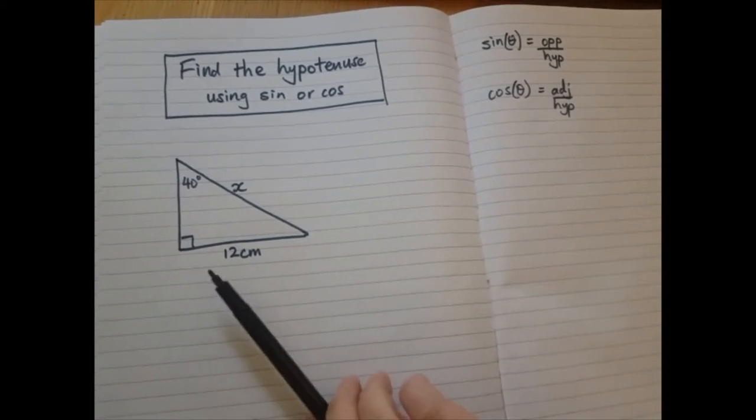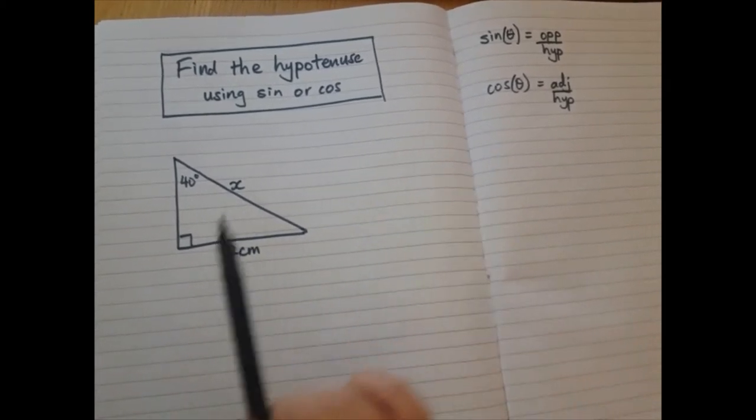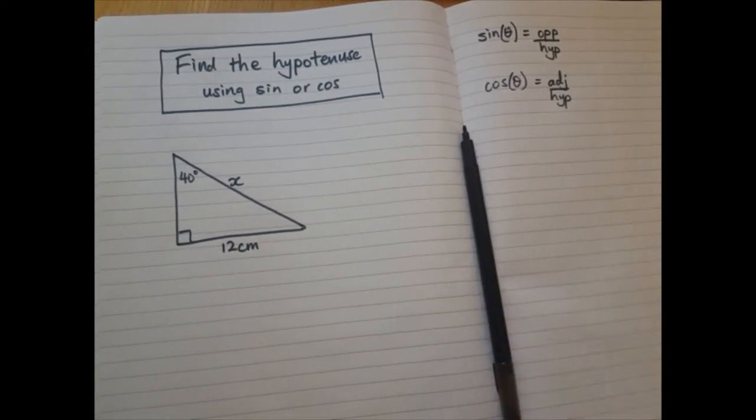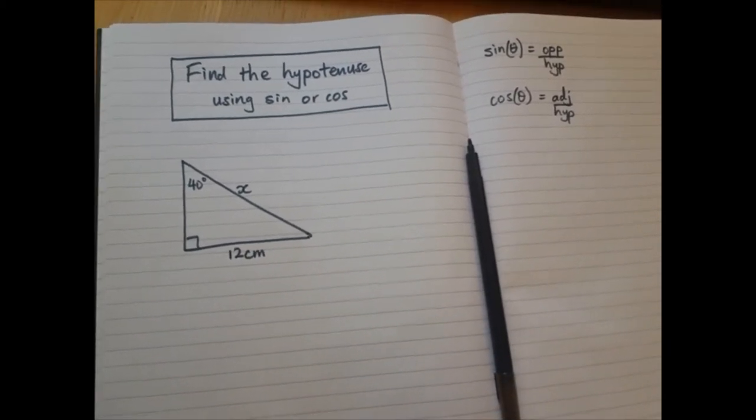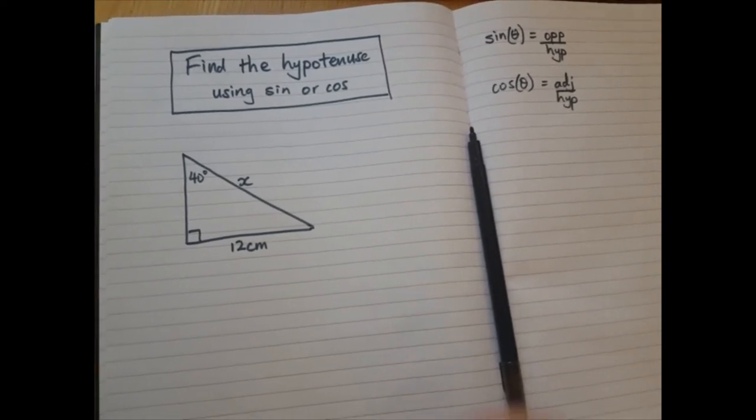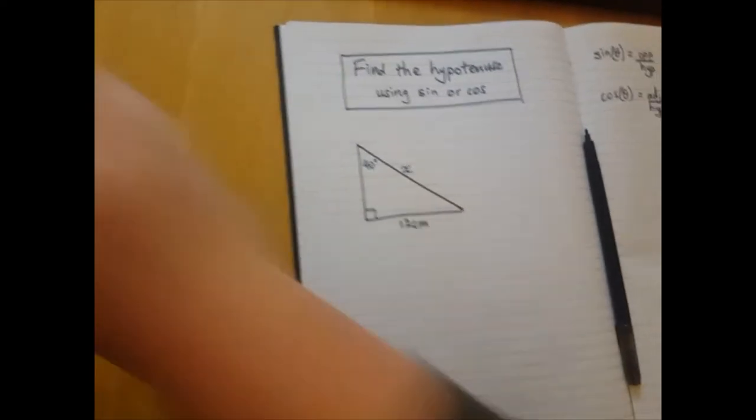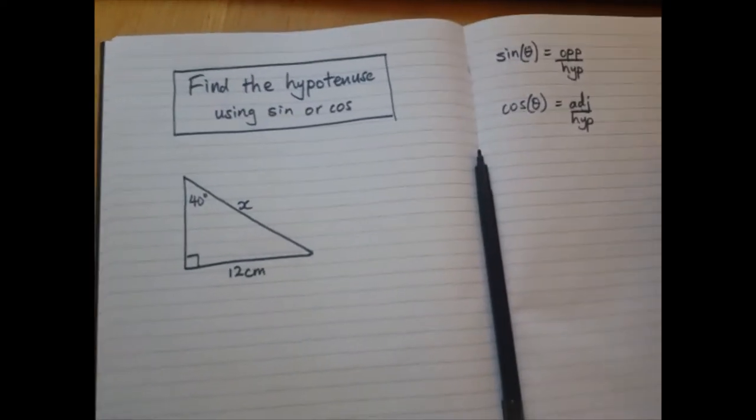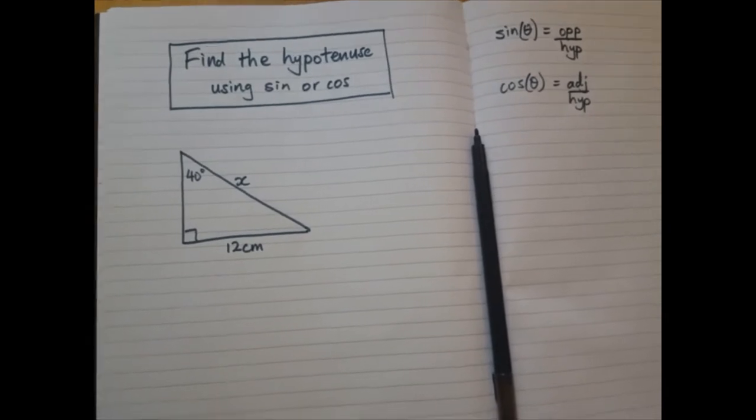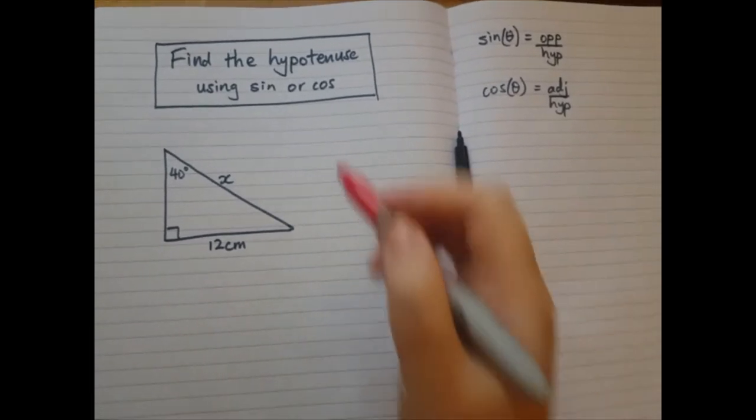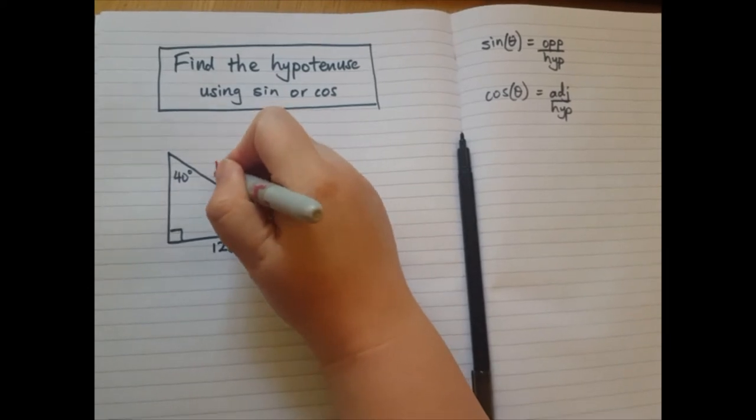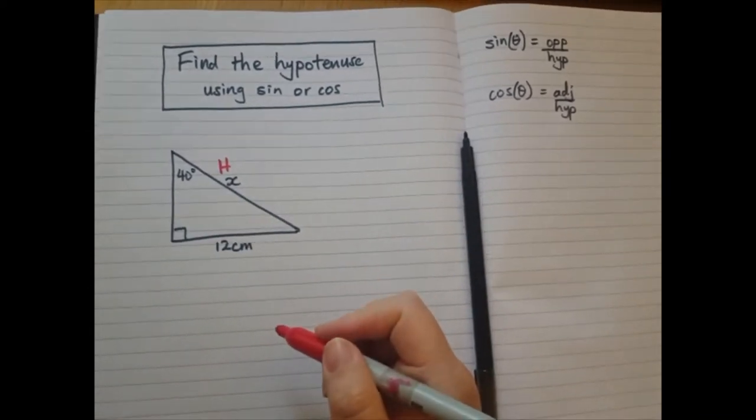Now, here's the triangle we are going to use. Step one is always label which side is the hypotenuse and then which side is adjacent or opposite. So I don't have my camera stand today, so you'll have to put up with me holding my phone. The hypotenuse is the longer side. That's this one. I'm going to label it H for hypotenuse there.